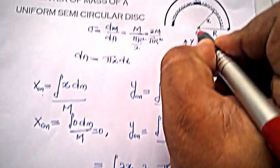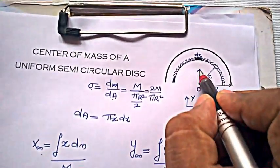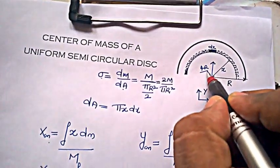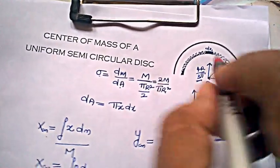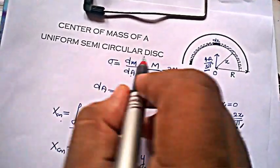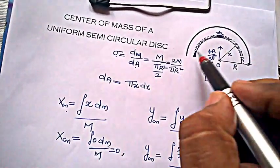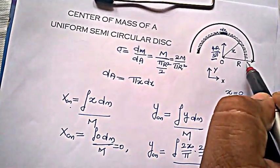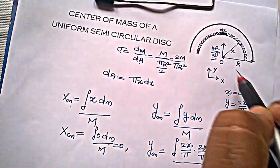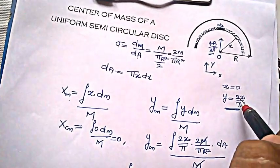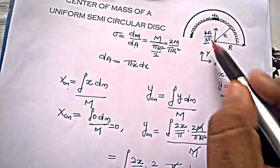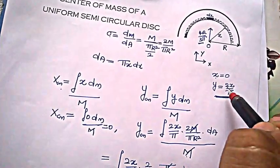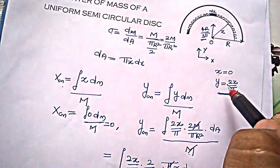The center of mass lies at a height of 4r/3π for a semicircular disc, whereas for a semicircular wire or ring it lies at a distance of 2r/π. I hope this is clear. Thanks for watching the video.